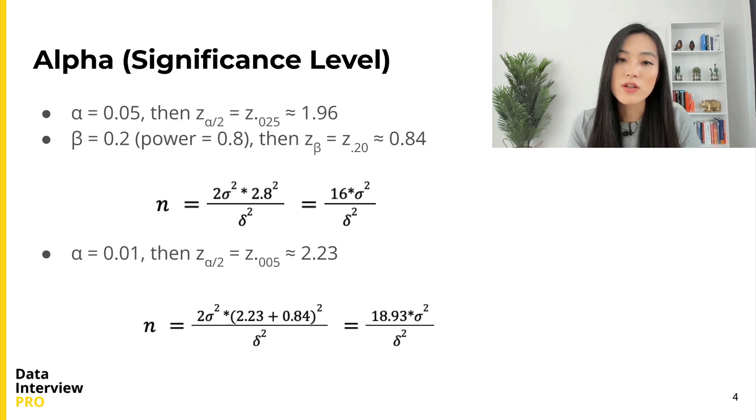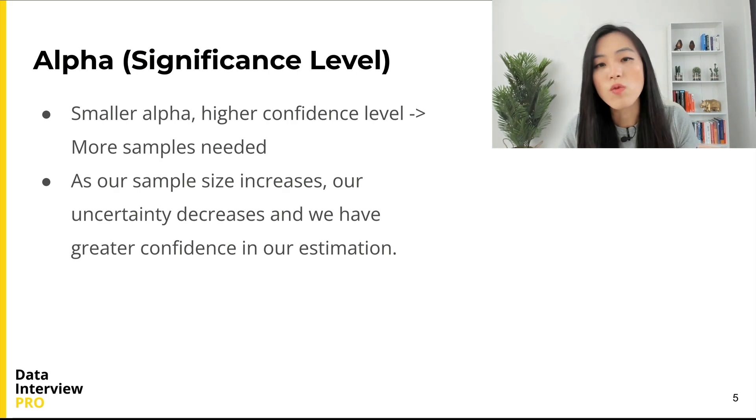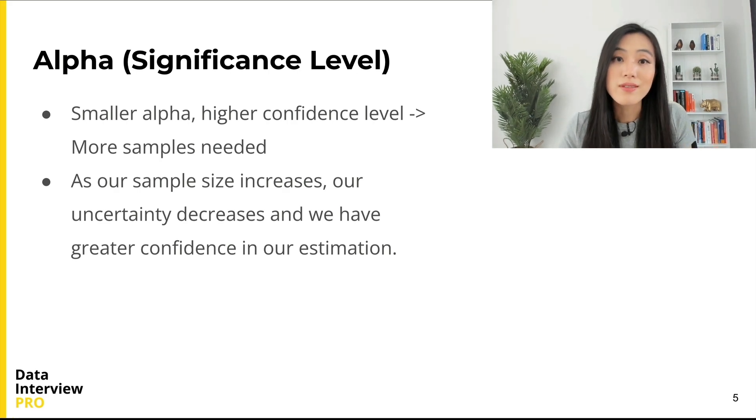If we want to be more conservative and lower the significance level α, we can set α to be a smaller value. For instance, when α is 0.01, z_{α/2} becomes 2.23, which is larger than 1.96 when α is 0.05. Our coefficient increases from 16 to almost 19.